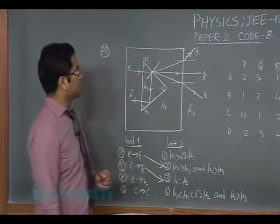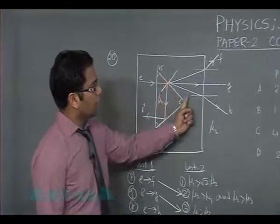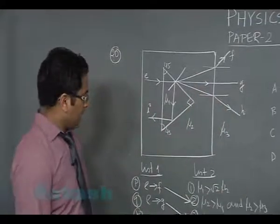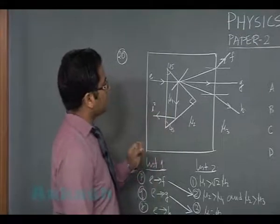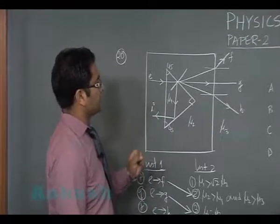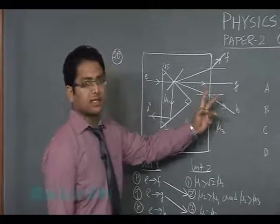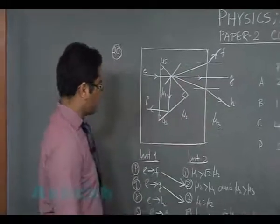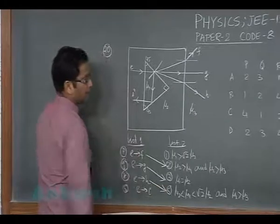E to H, you could see here it's bending away from the normal and even here it's bending away from the normal. And quite obviously it is not satisfying the condition of total internal reflection, for the ray E to H in both the situation, although it's passing from denser to rarer in each. So E to H will lead us to option number S.